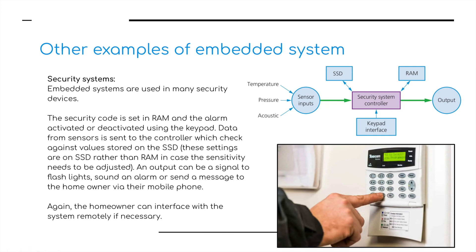Security systems are another example of embedded systems. It's very simple — a person controls it with a keypad. The security code is set in RAM and the alarm is activated or deactivated using the keypad. Data from sensors is sent to the controller, which checks against values stored on the hard disk. The output can be a signal to flash lights, sound an alarm, or send a message to the homeowner on their mobile phone — it can even contact police. The owner can interface with the system remotely if necessary. Components include different sensors such as temperature and acoustic sound sensors, the controller itself, a keypad interface, links to hard disk, links to memory, and the alarm as output.